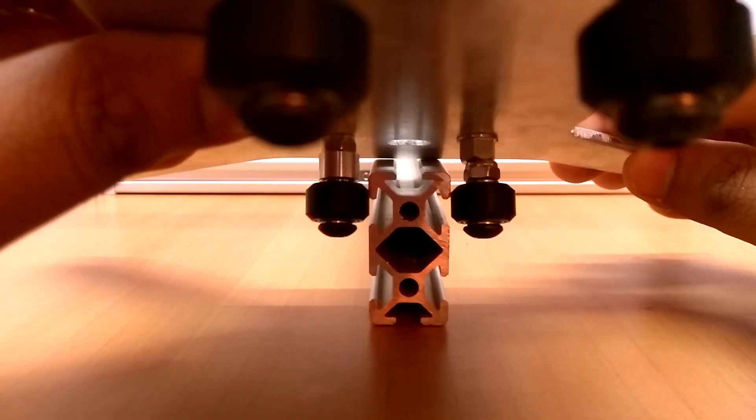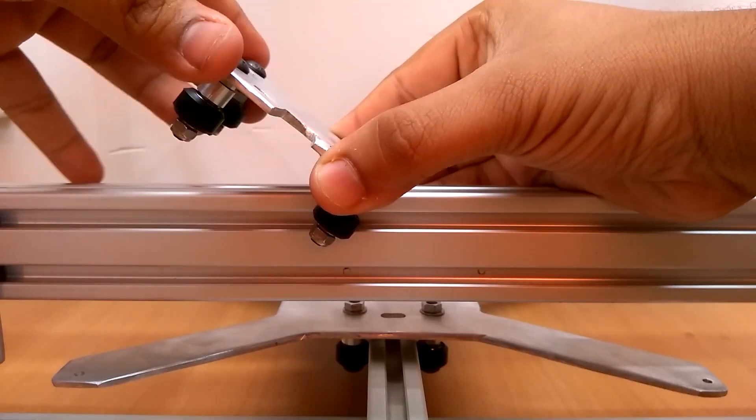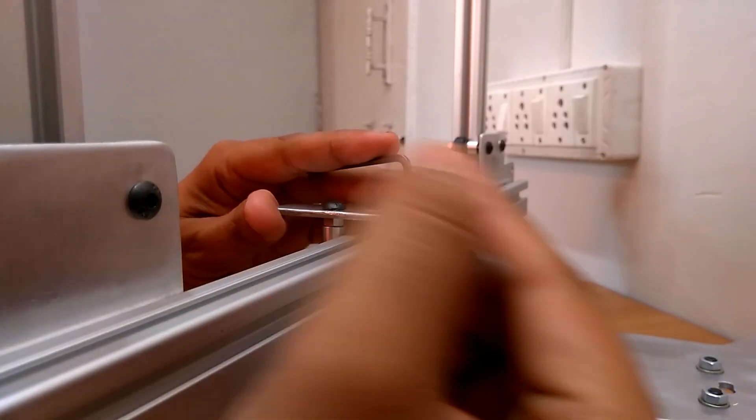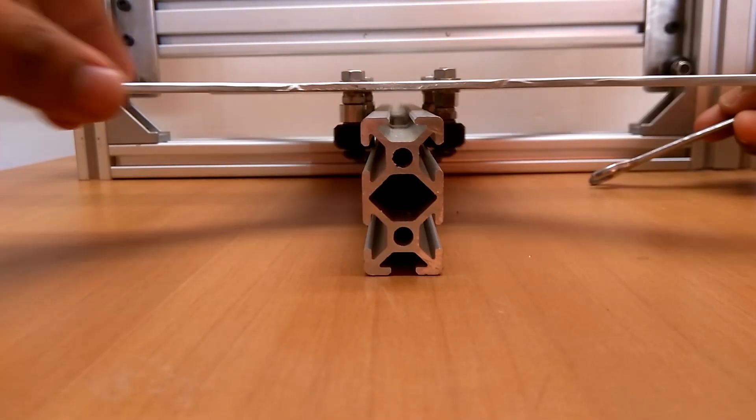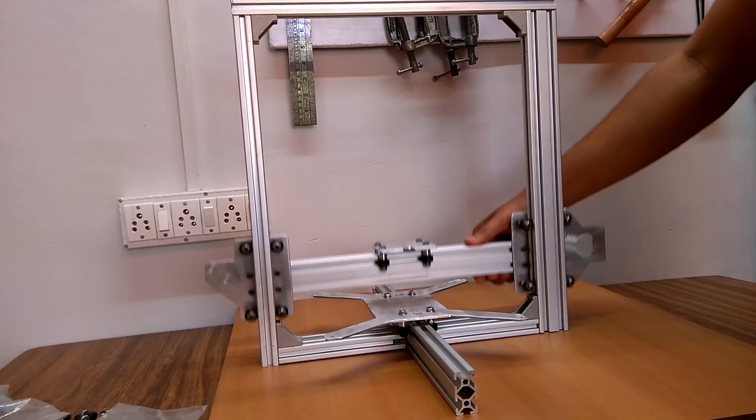Then I fixed the Y and X axis gantry plates similarly and tightened the eccentric nuts. And thus, the first part of the mechanical build was complete.